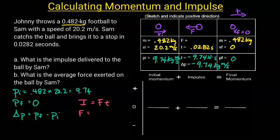To find the force, it's just going to be the impulse divided by time. The impulse is negative 9.74 and the time is 0.0282. Doing that division, I get 345 Newtons.